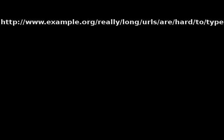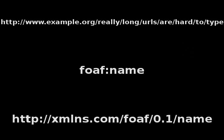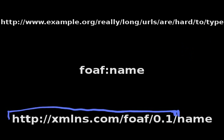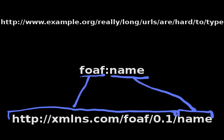An example of a CURIE is foaf:name. In this case, foaf expands to a much longer URL, and name is appended to that URL. You don't need to know what the URL means right now, just that the thing on the left side of the colon expands to a long URL, and the thing on the right side of the colon is added to the end of the expanded URL.